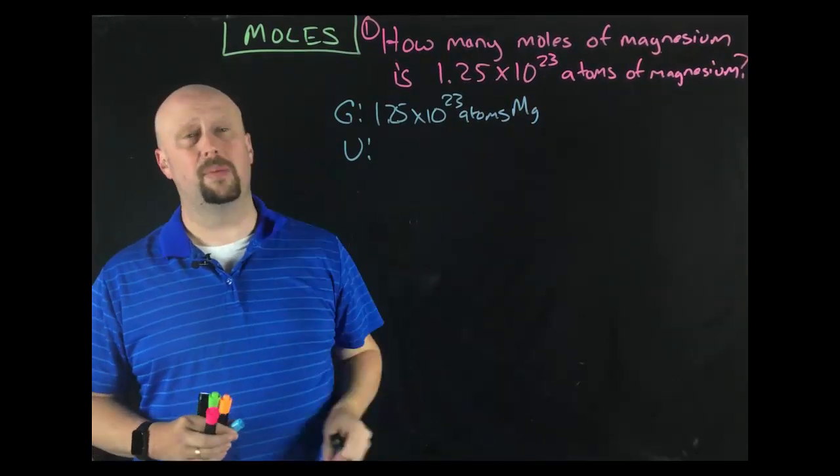So, the first thing I'm going to do, as I would with most of our problems, is I'm going to write down my given and my unknown. My given is 1.25 times 10 to the 23rd atoms. And I'm going to label it. Not really necessary in this particular problem, but in general that becomes really important to us what chemical it is. And so what I'm looking for is moles of magnesium. M-O-L, by the way, is the abbreviation for moles. That is the abbreviation for moles.